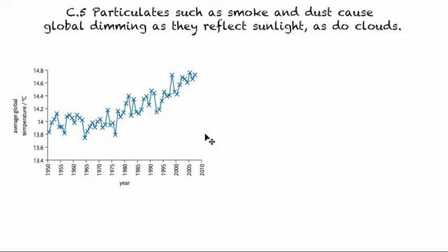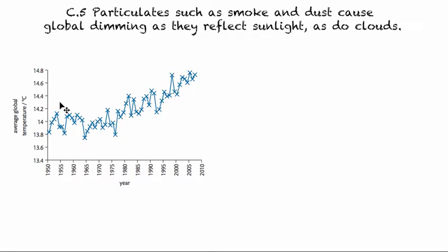So let's see where this idea comes from in terms of modern reference. If we look back to about the 1960s, you can actually see there was a downward trend in average global temperature for that period, which has then been superseded. This was due to something called global dimming. During this time there was a lot of volcanic activity that put a lot of particulates — examples being smoke and dust — into the air.